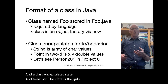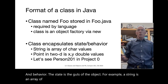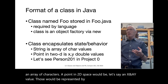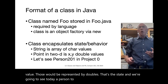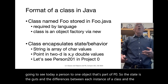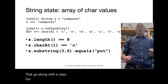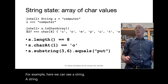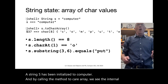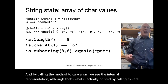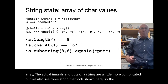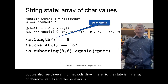A class encapsulates state and behavior. The state is the guts of the object — for example, a string is an array of characters, and a point in 2D space would be an X and a Y value represented by doubles. We're going to see today a Person201 object that's part of P0. The state is the guts and the differences between each instance of a class, and the behavior are the methods that go along with a class.